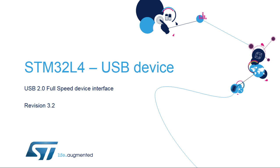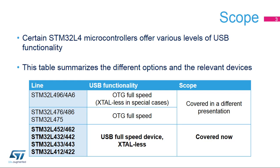Hello, and welcome to this presentation of the STM32L4 USB 2.0 Full-Speed Interface. It covers the features of this interface, which is widely used to interface with a PC. This slide explains the scope of this chapter within the STM32L4 product lines. As can be seen in this table, this presentation describes the USB 2.0 Full-Speed Device Interface, supported in STM32L452-462 and STM32L432-442-433-443 devices.